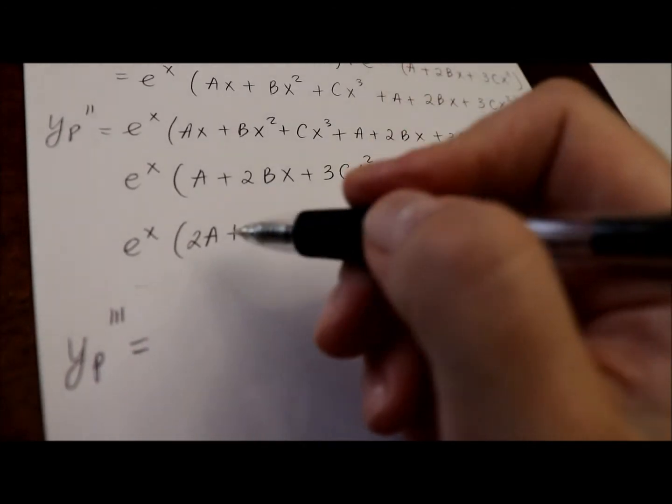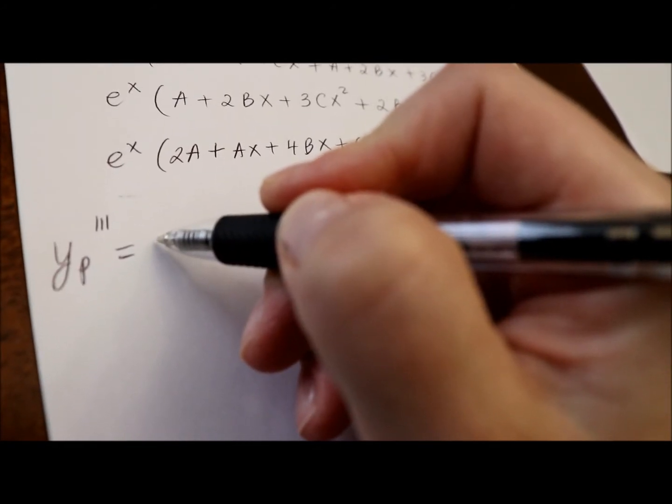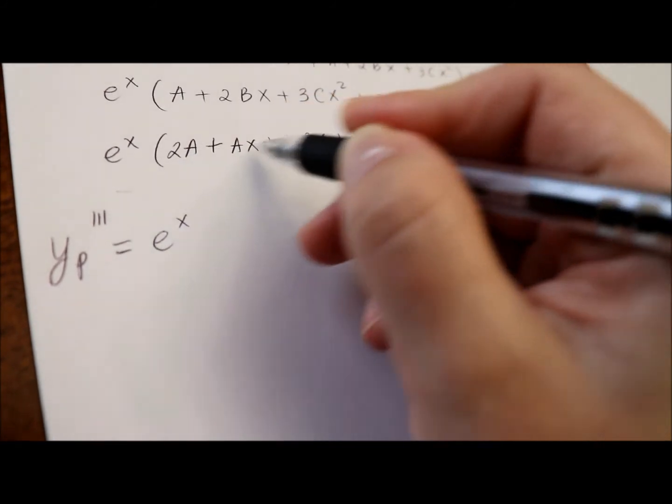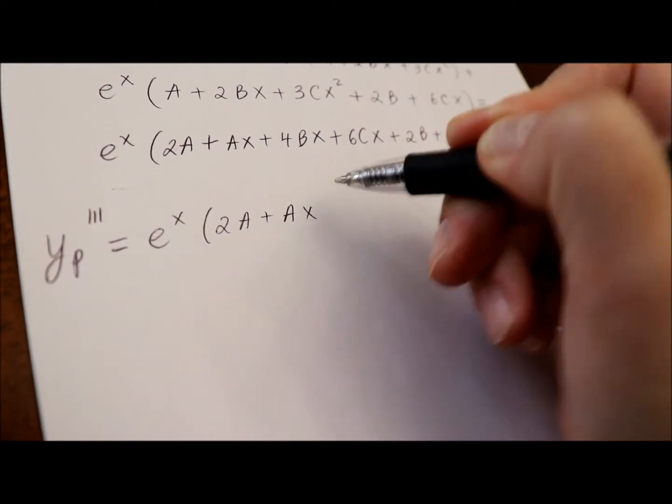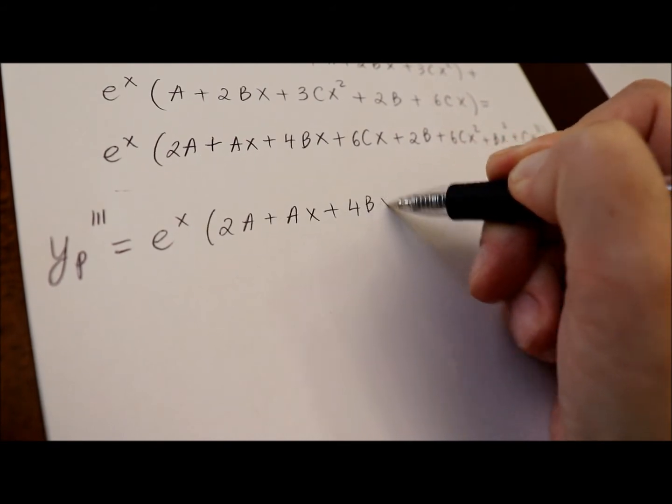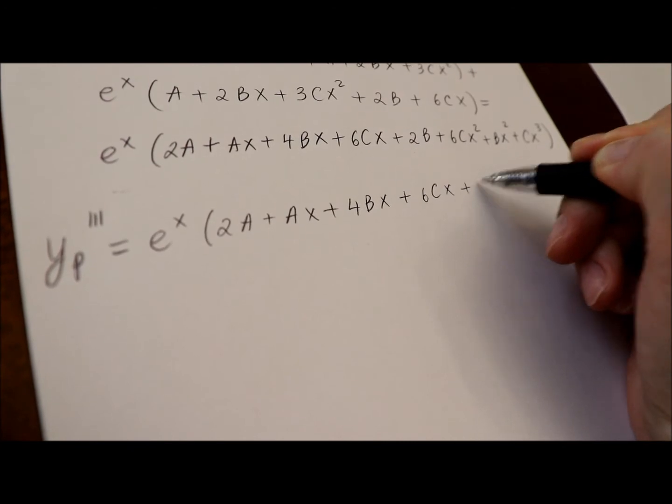So, we'll have first function e to the x, derivative of itself, times, copy all this. Make sure to be very careful because if you make one little mistake,